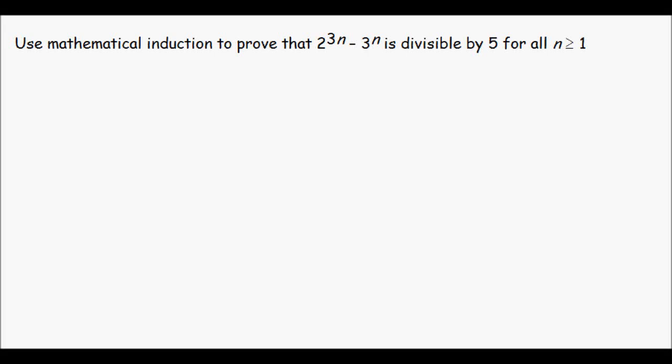Hello and welcome. In this video we're going to use mathematical induction to prove that 2 to the power of 3n minus 3 to the power of n is divisible by 5 for all natural numbers, or n is greater than or equal to 1.